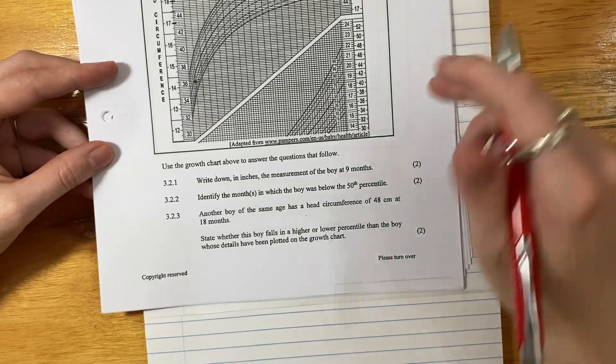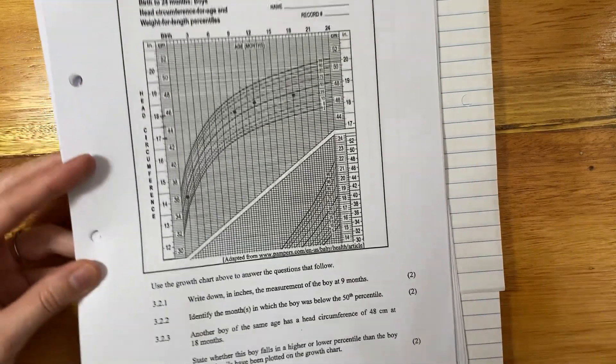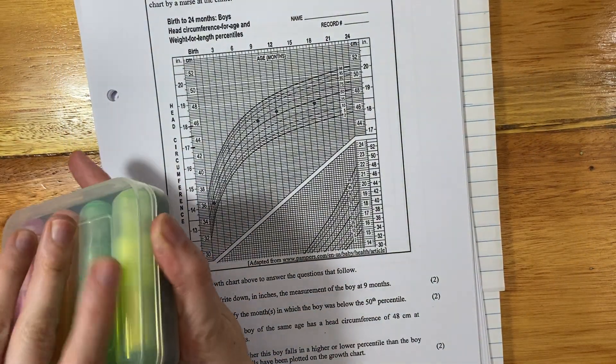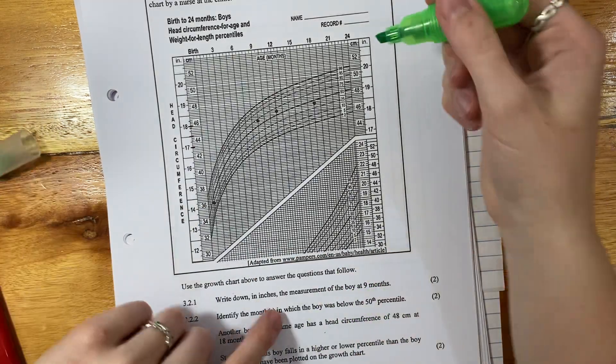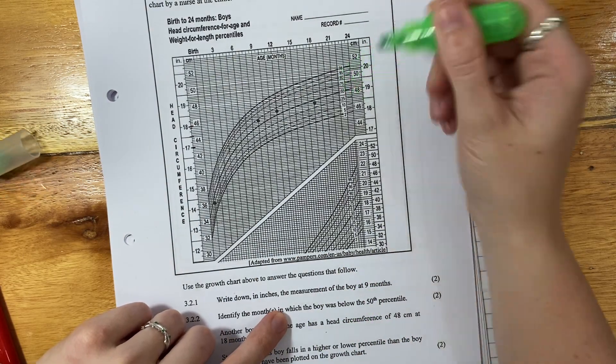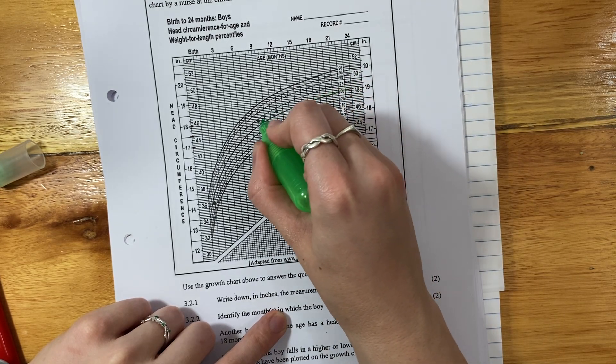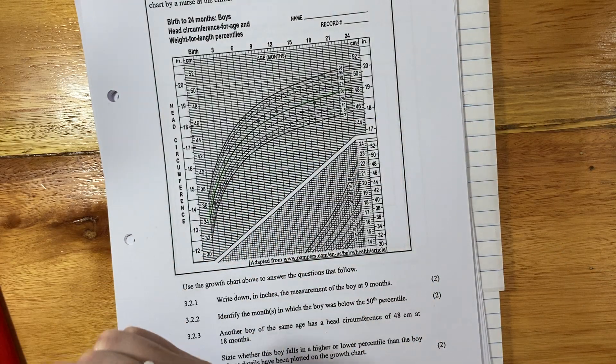Identify the months in which the boy was below the 50th percentile. Now, this is quite a tricky one, because we have to figure out where the 50th percentile is. So I'm actually going to use a highlighter, just because I think that that's quite helpful. So these are all labeled here. Those are my percentiles. So this here is my 50th percentile. So now I've highlighted it in green. Now it's quite easy.